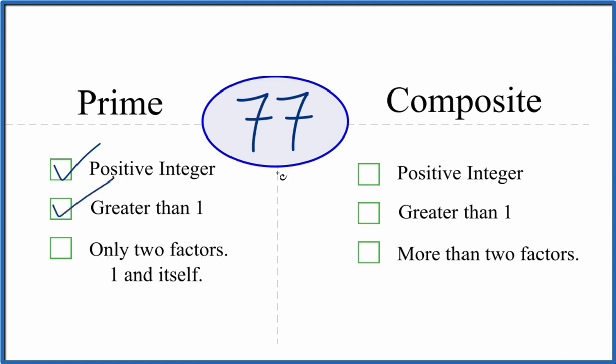Are there only two factors with 77, 1 and itself? Well, 1 times 77 equals 77, so these are factors. But are there any other factors? It turns out you can multiply 7 times 11, and that gives you 77 as well.